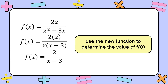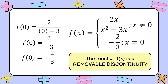We use this redefined function to get the value of f of 0. Substituting 0 for x: 2 over 0 minus 3 equals 2 over negative 3, or negative 2 thirds. We now redefine our function as f of x equal to 2x over x squared minus 3x if x is not equal to 0, and negative 2 thirds if x is equal to 0.